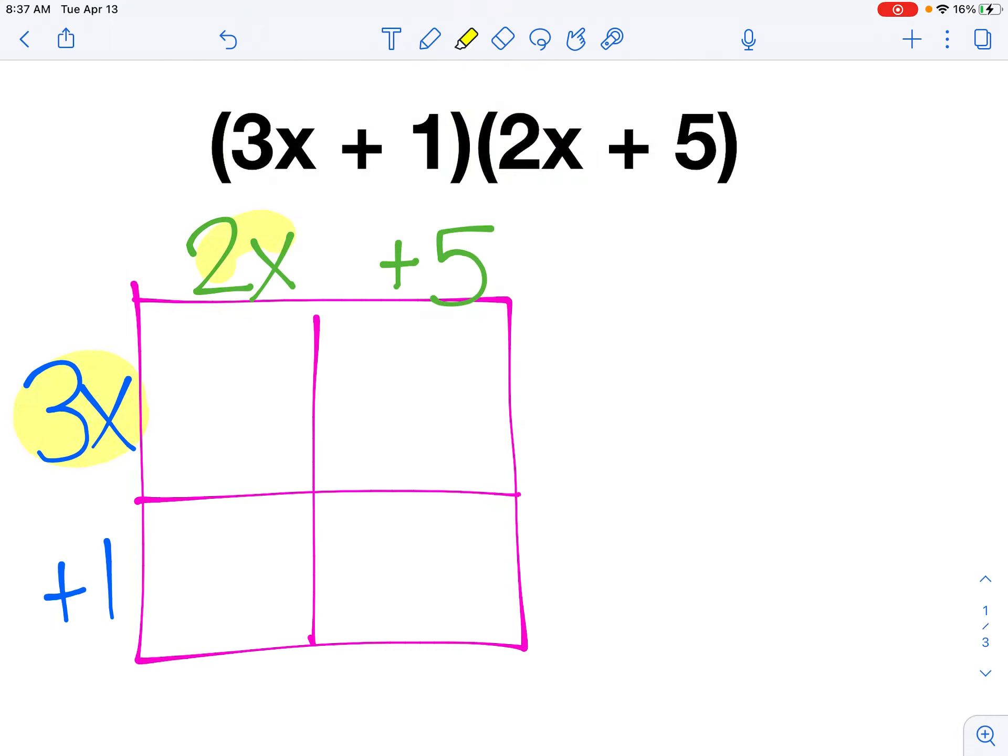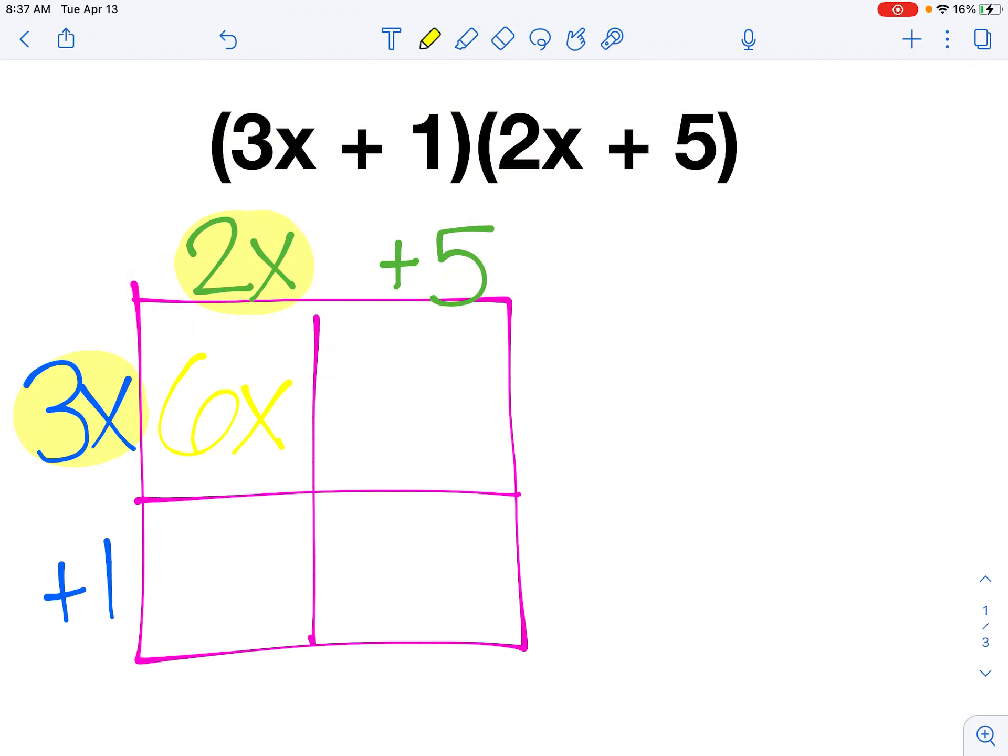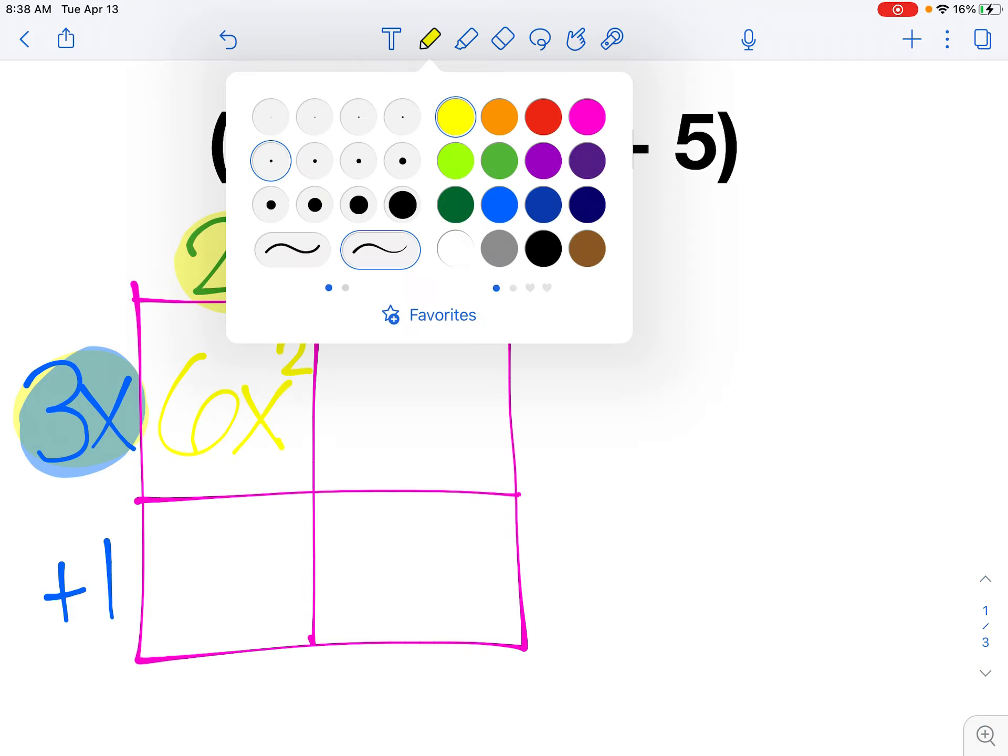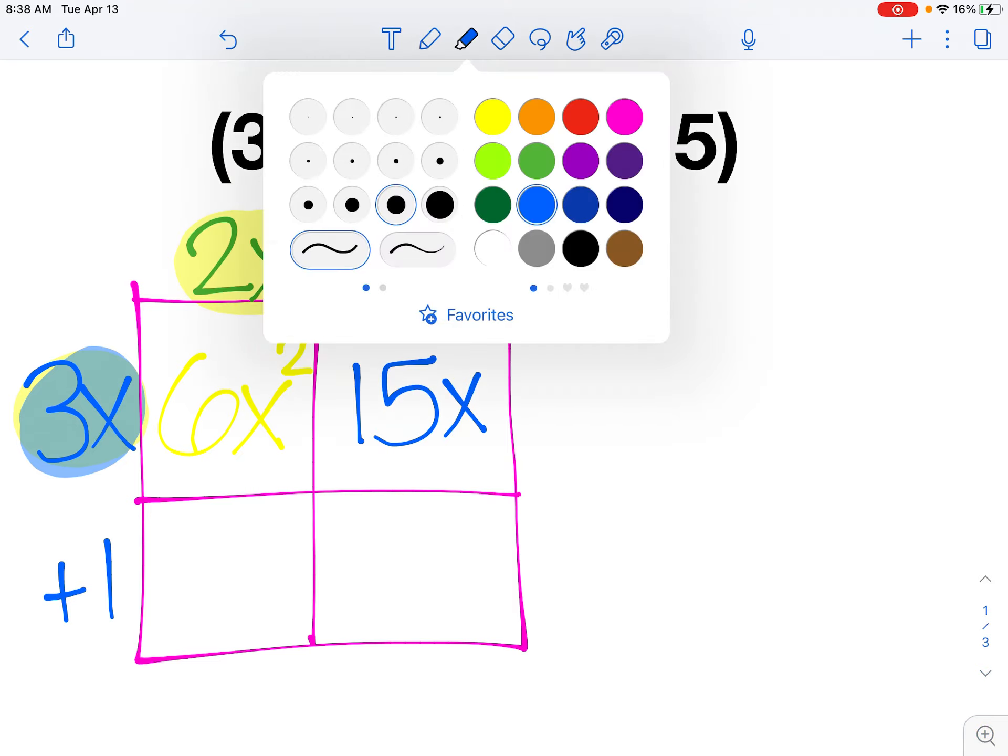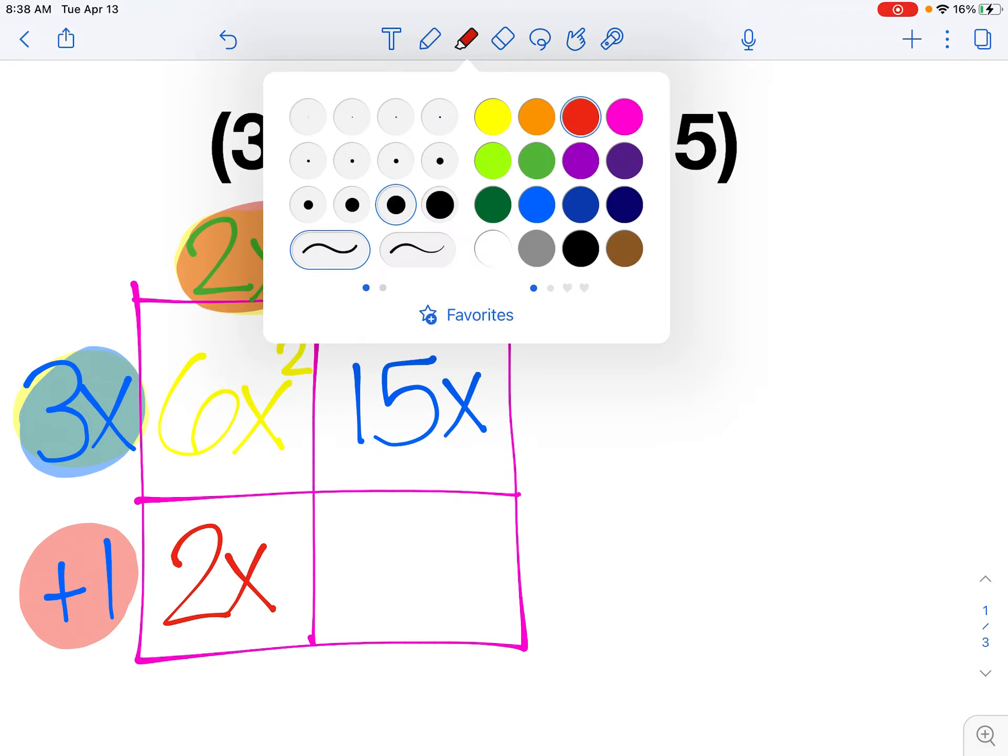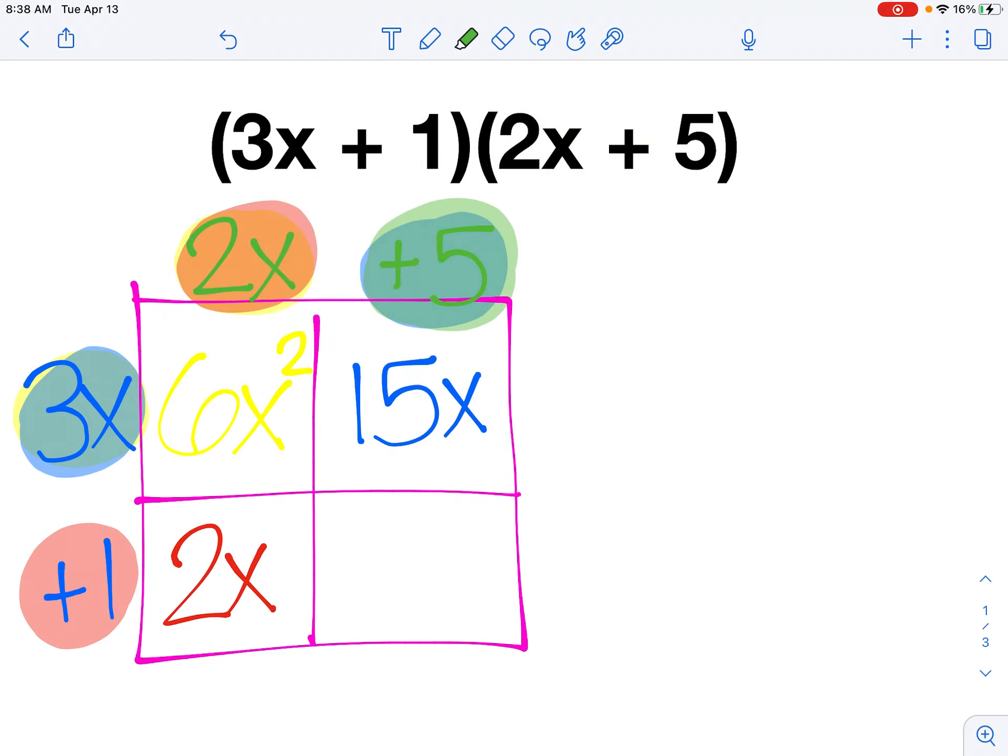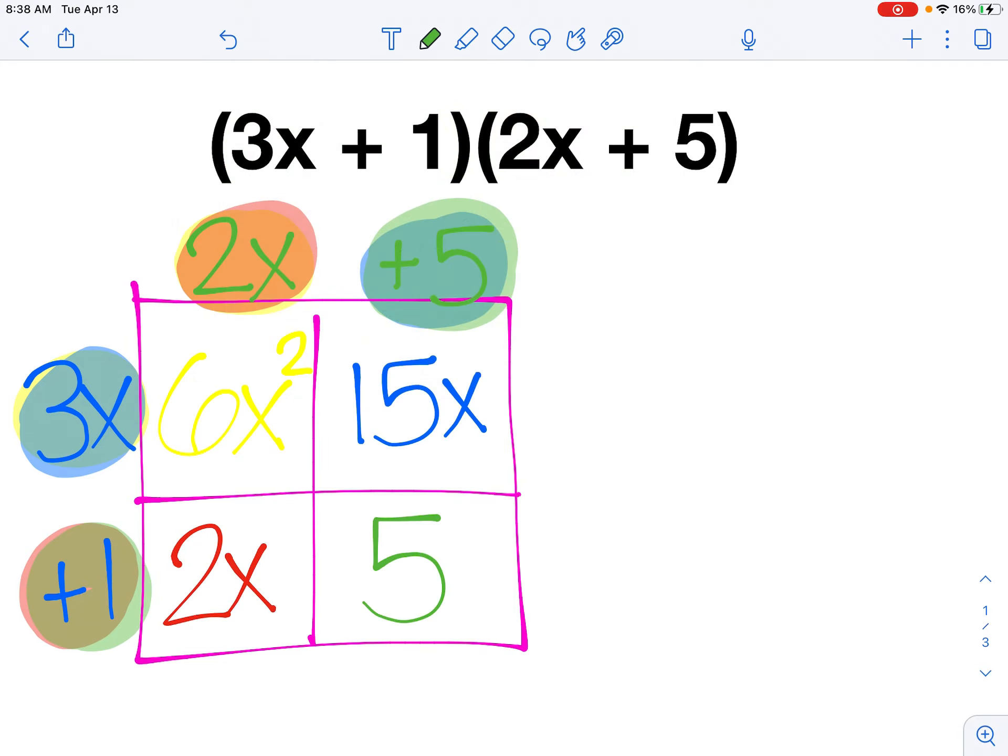All right, so at this point, hopefully you've returned after multiplying. I'm going to fill in each piece one step at a time. So first off, I have 3x times 2x. 3 times 2 is 6. x times x is x squared. So 6x squared. Next, I have 3x times 5. 3 times 5 is 15 with an x. Moving down to my bottom row, I have 2x times 1, which is just going to leave me with 2x. And finally, to wrap it all up, I have a 5 times a 1. 5 times 1, positive 5, positive 1. My answer is positive 5.